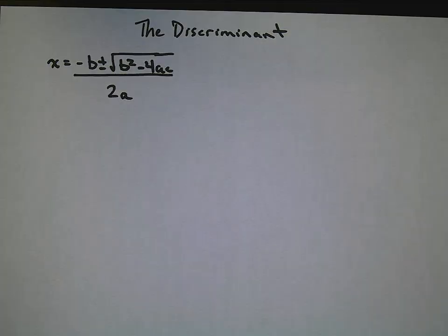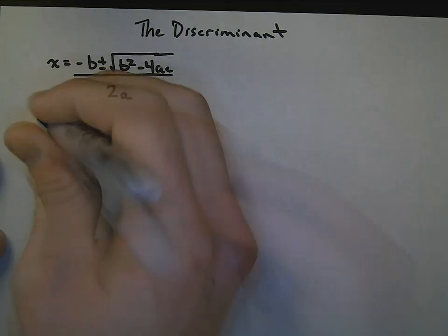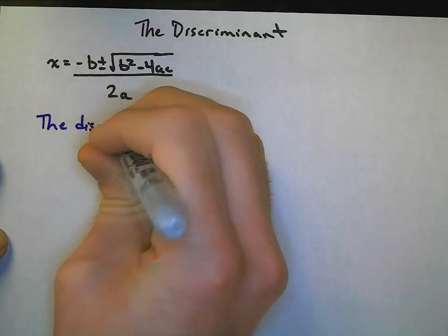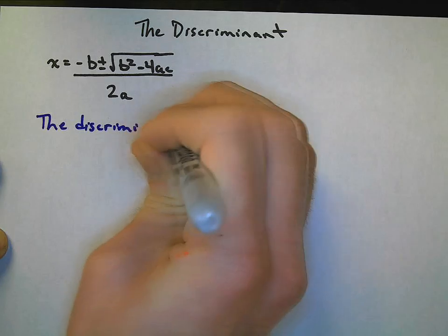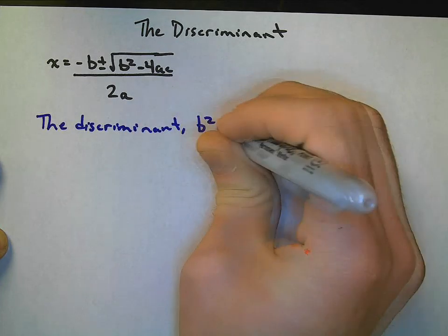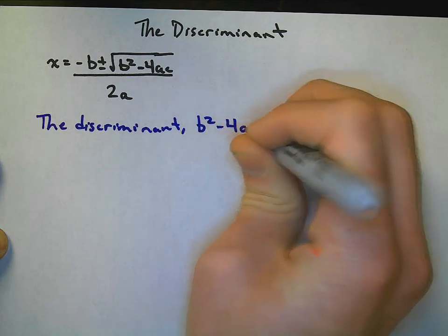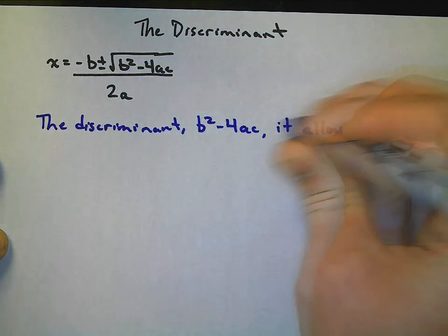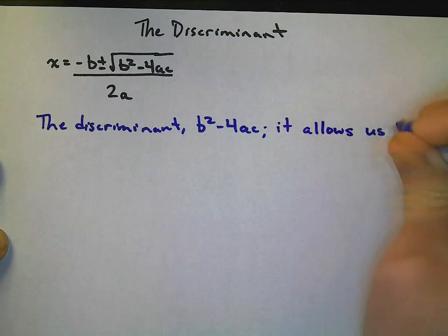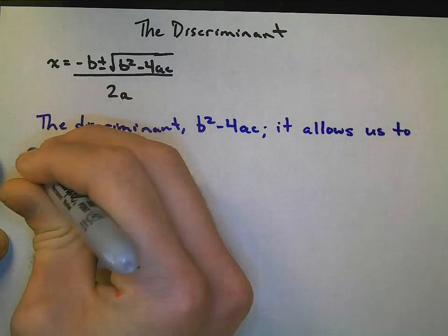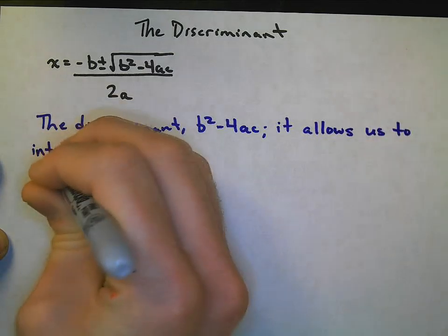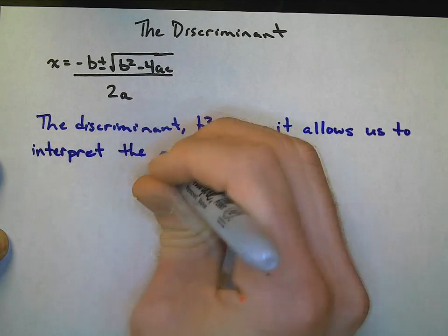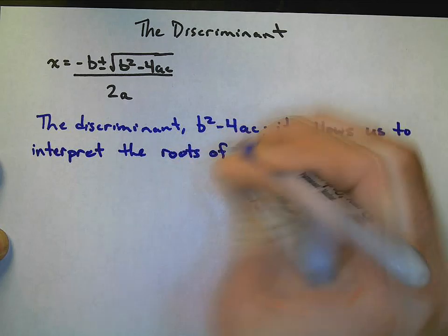Okay, what is the discriminant? The discriminant is in the quadratic formula, clearly, and that is b squared minus 4ac. And it allows us to interpret the roots of a quadratic.